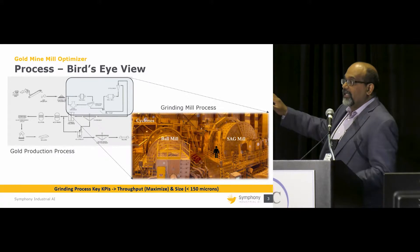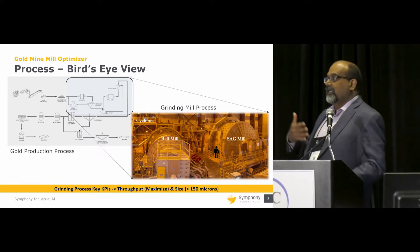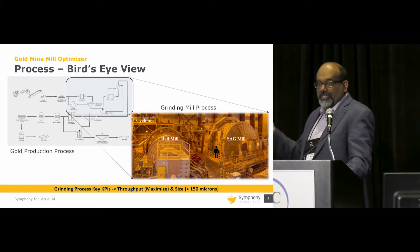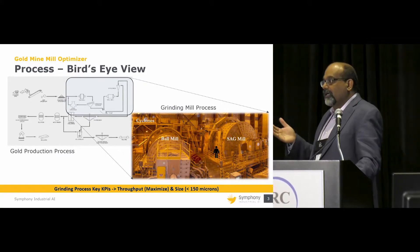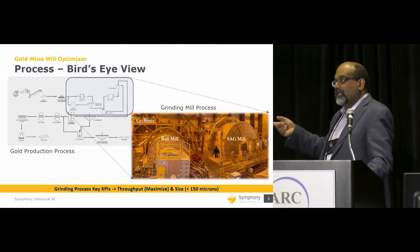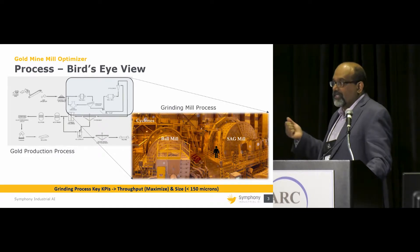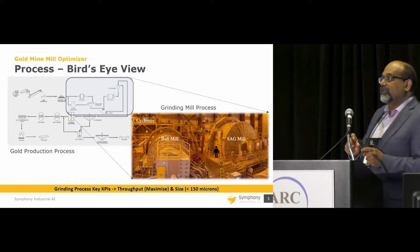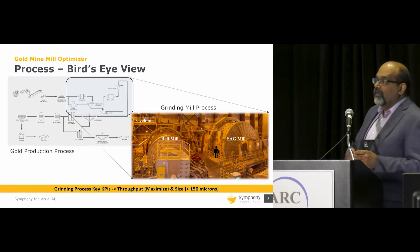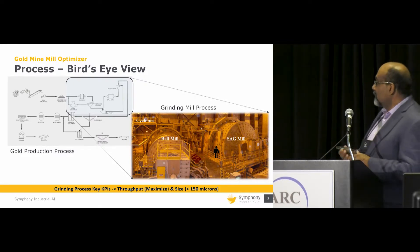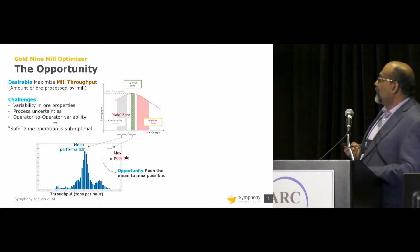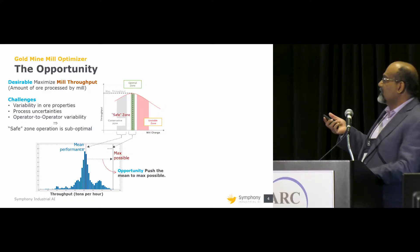The traditional operations have operators looking at screens in a control center, looking at conditions and adjusting the thresholds of how much tonnage can go through. The feed is fed in based on what the operators control. The model predictive controller adjusts the variables, whether it is motor current or other changeable variables. The opportunity here is to maximize the mill throughput, and the challenges are the variability in ore properties, process uncertainties, and operator-to-operator variability.